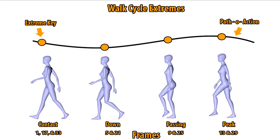Now, following that, we have the passing position, where the opposite foot — opposite the planted foot — is starting to swing forward to get ready to plant. And then we have the peak position, the highest point in the walk, where that opposite foot is just about to plant, so we can cycle right back to the contact.